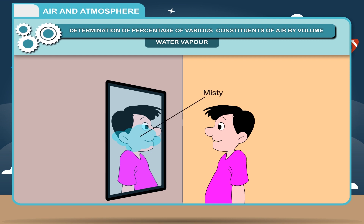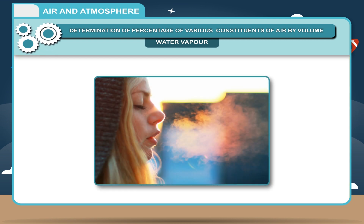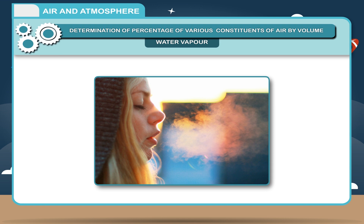The water vapor in your warm breath condenses on the surface of the mirror, making it misty. In winters, your breath comes out like smoke because the air is so cool that condensation of water vapor is immediate, and the condensed water vapor looks like smoke.